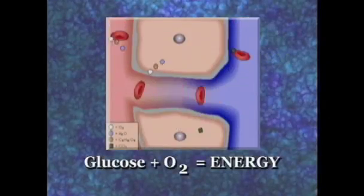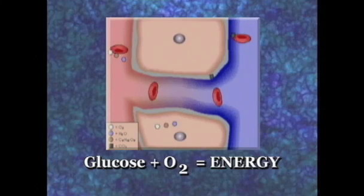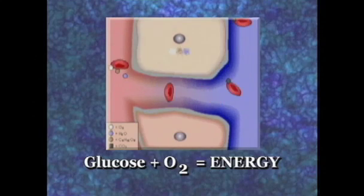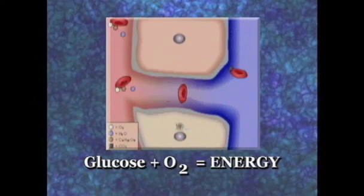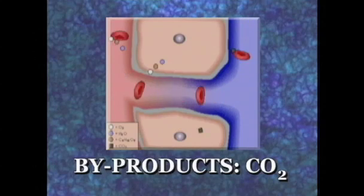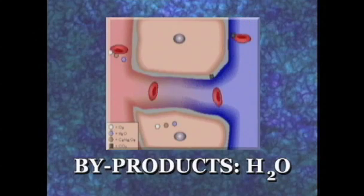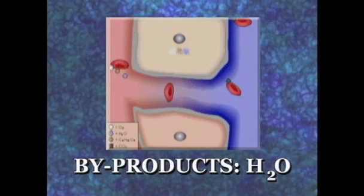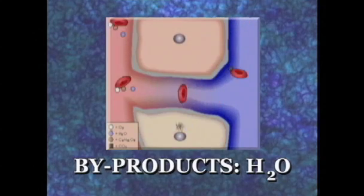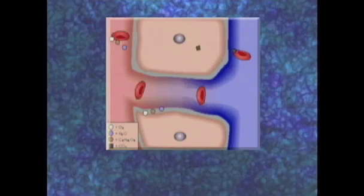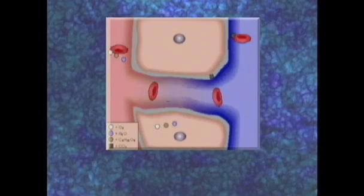This process converts glucose — blood sugar — and oxygen into energy. Carbon dioxide and water are byproducts of this chemical reaction. The carbon dioxide must be removed from the body.